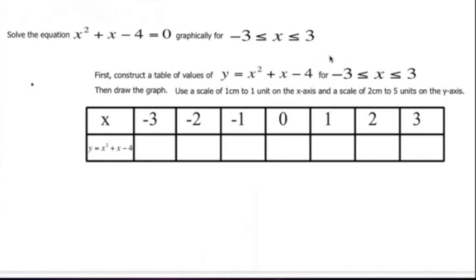So what we're going to do is solve the equation x squared plus x minus 4 equals 0. And we're going to set up a graph.